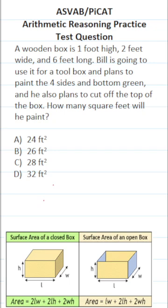This arithmetic reasoning practice test question for the ASVAB and PICAT says a wooden box is one foot high, two feet wide, and six feet long.